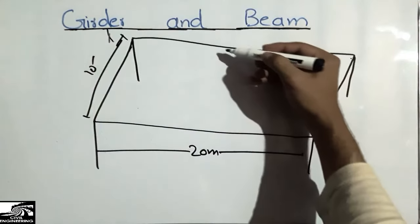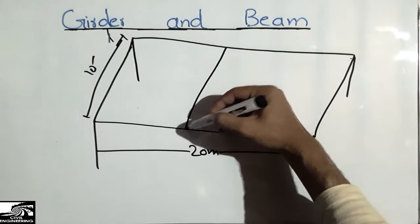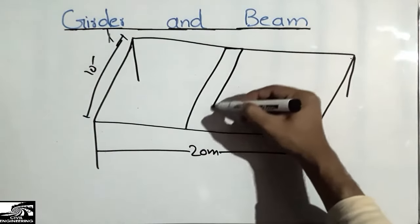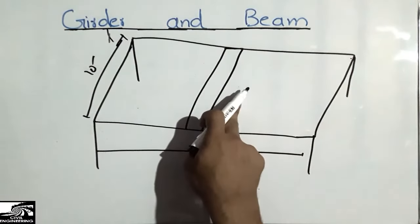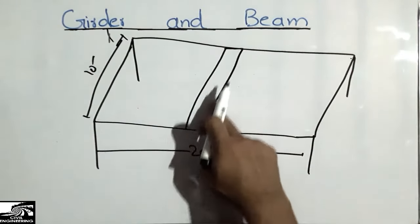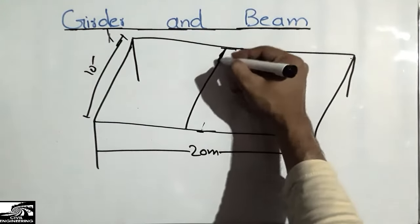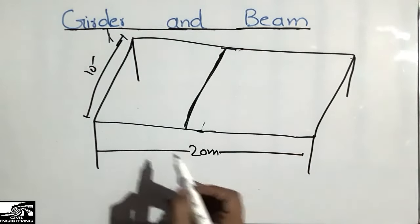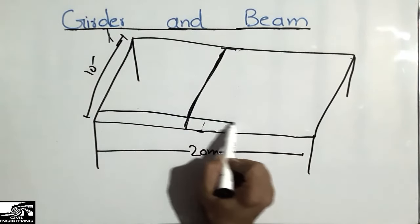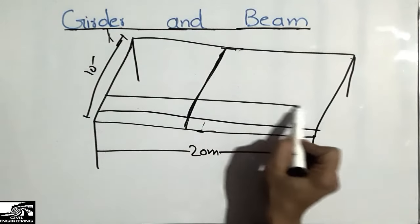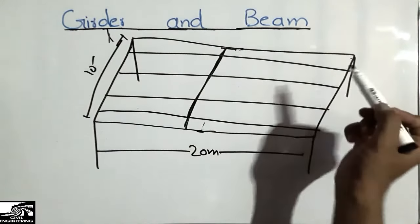The structure will tend to bend in the long direction, since it's huge, while the shorter direction is more stable. So what engineers do is place a girder in the center of this hall. The girder has more width and more depth. I'll show it by a line — this is the girder. After the girder, they design the beams on top of the girder.